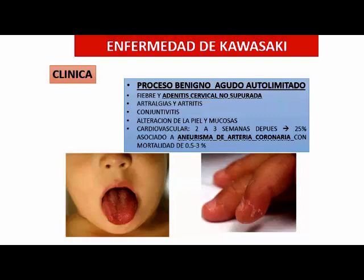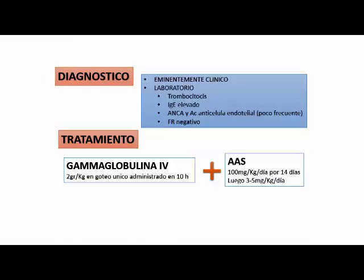El diagnóstico es evidentemente clínico, generalmente puede haber el compromiso clínico ganglionar, artrálgico, febril, asociado a trombocitosis, IgE elevado. El ANCA y los anticuerpos anticardiolipina son poco frecuentes pero pueden ser positivos. El factor reumatoide debe ser negativo. El tratamiento fundamentalmente es gammaglobulina intravenosa en algunos casos asociado a aspirina, muy parecido al manejo de la fiebre reumática. Aspirina en dosis de 100 miligramos por kilo día por 14 días, dosis altas de ácido acetilsalicílico.